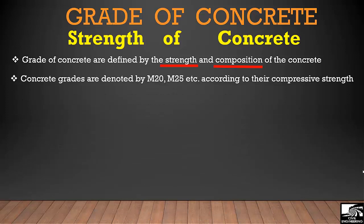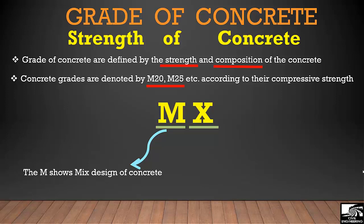Concrete grades are denoted by M20, M25 according to the compressive strength. Now how to represent concrete grades. They are represented by two different letters, that is M and X. M shows mixed design of concrete and X shows compressive strength of concrete in megapascal at 28 days.